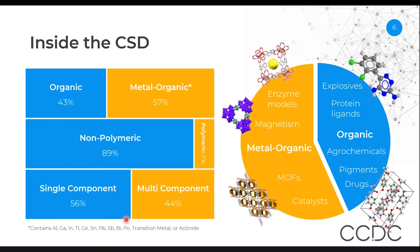The database is also pretty evenly split between single-component compounds and multi-component compounds. When we say multi-component, we are including things such as salts, co-crystals, and solvent-containing compounds such as hydrates.